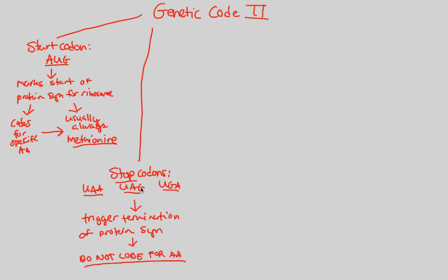UAA, UAG, and UGA do not code for an amino acid, because you want to end protein synthesis — you end it by not putting any more amino acids on the sequence. Once the ribosome reads any of these, it's not going to add another amino acid. UAA: no amino acid. UAG: no amino acid. UGA: no amino acid. This makes perfect sense because they are stop codons — if you don't want to continue protein synthesis, stop putting on amino acids.